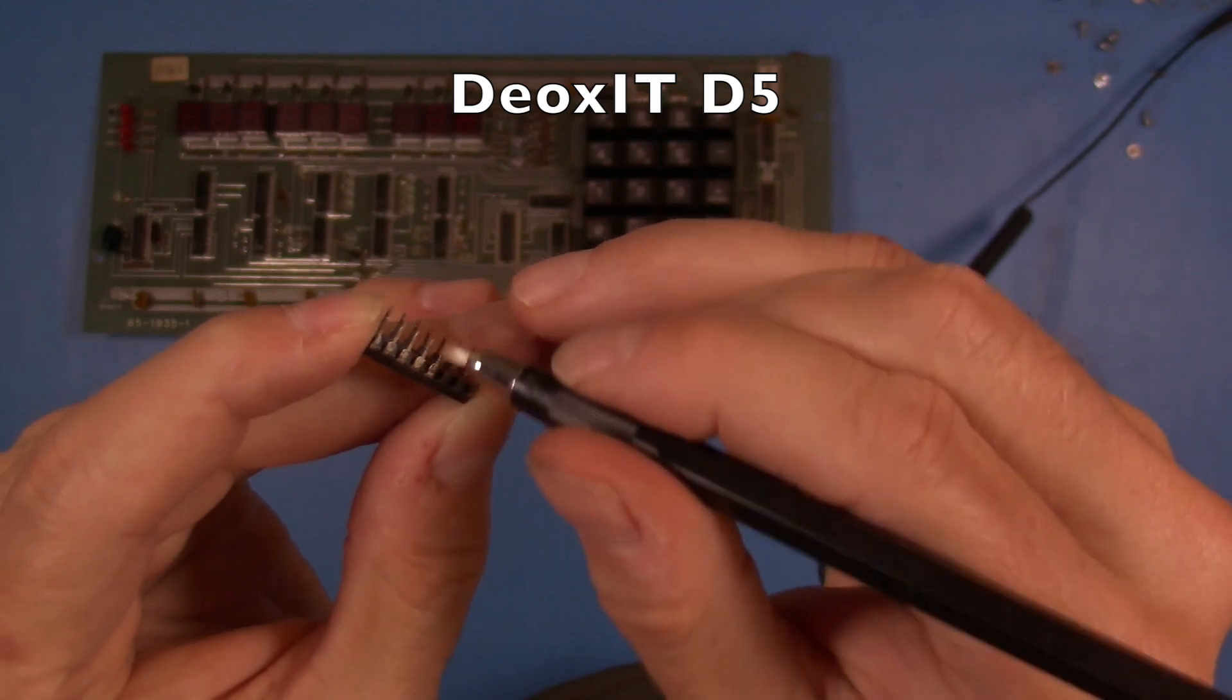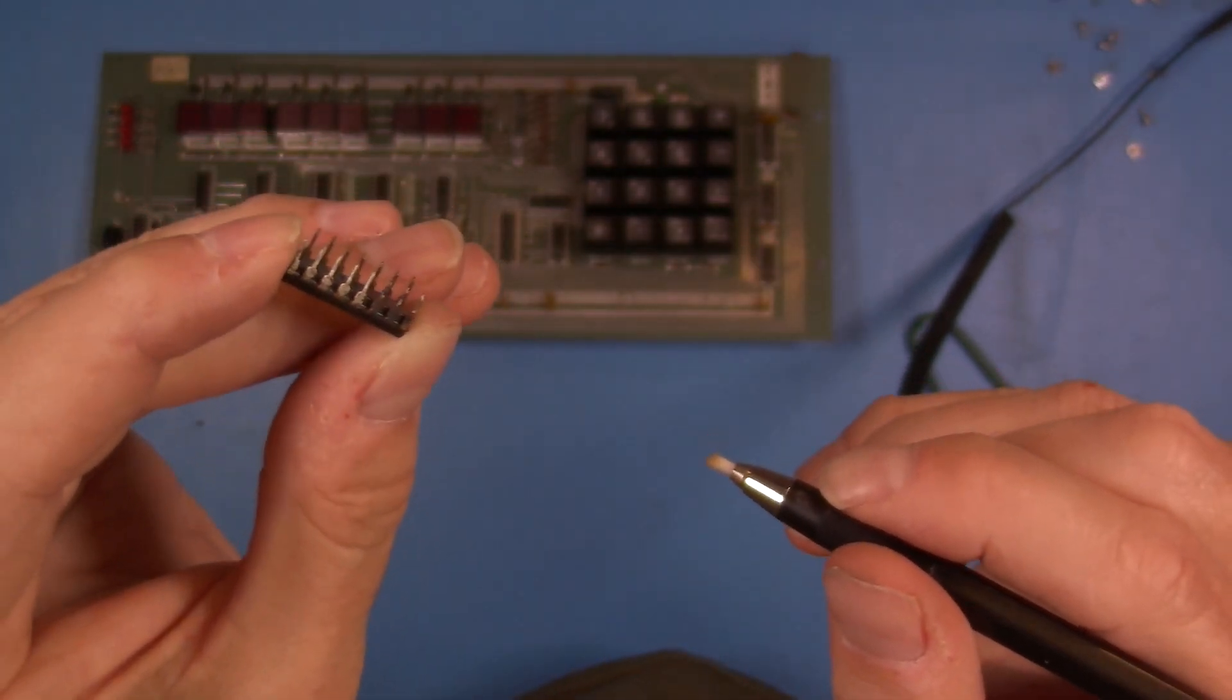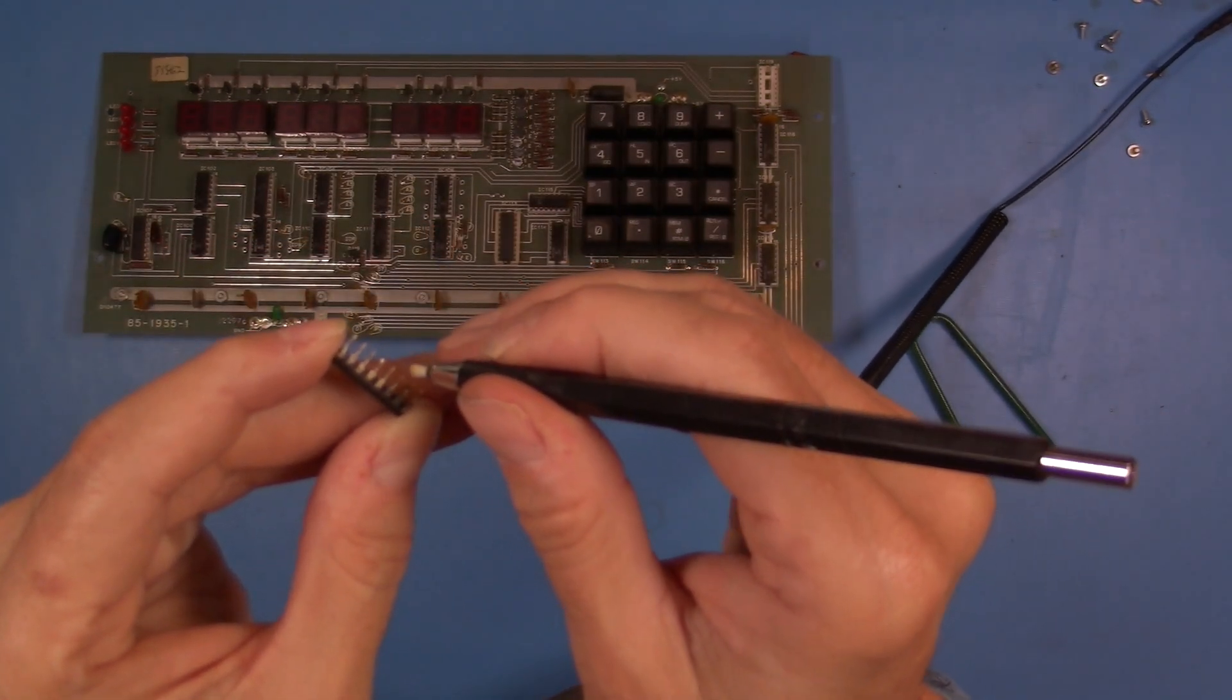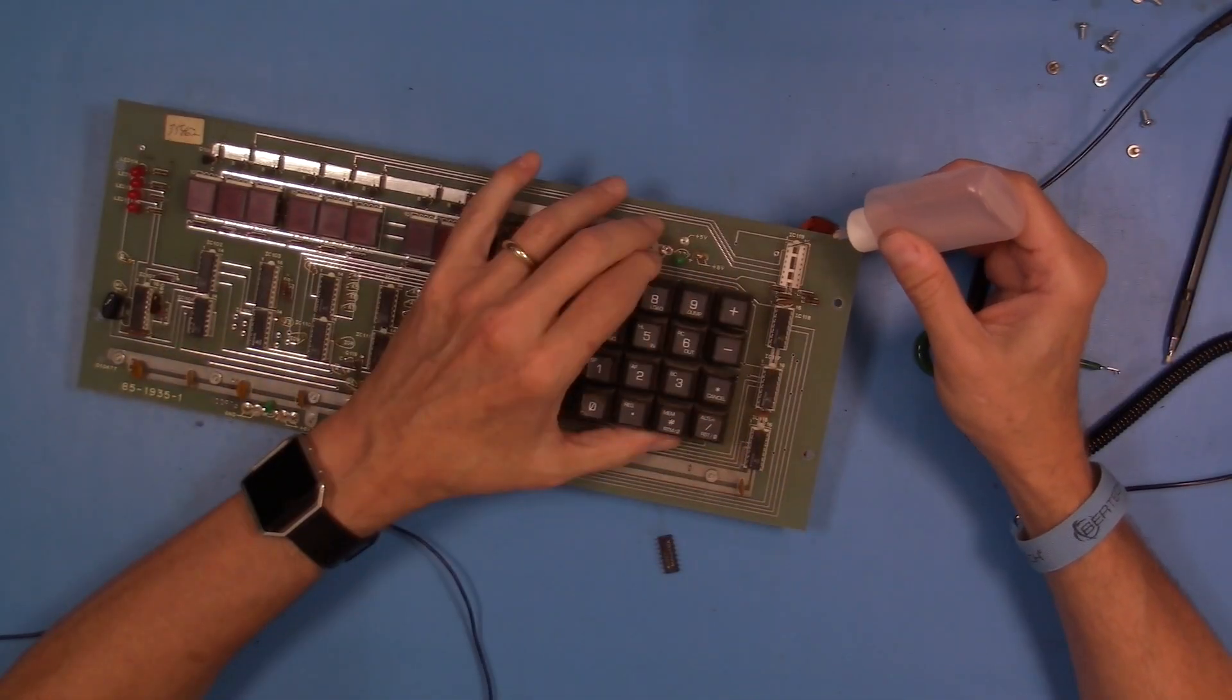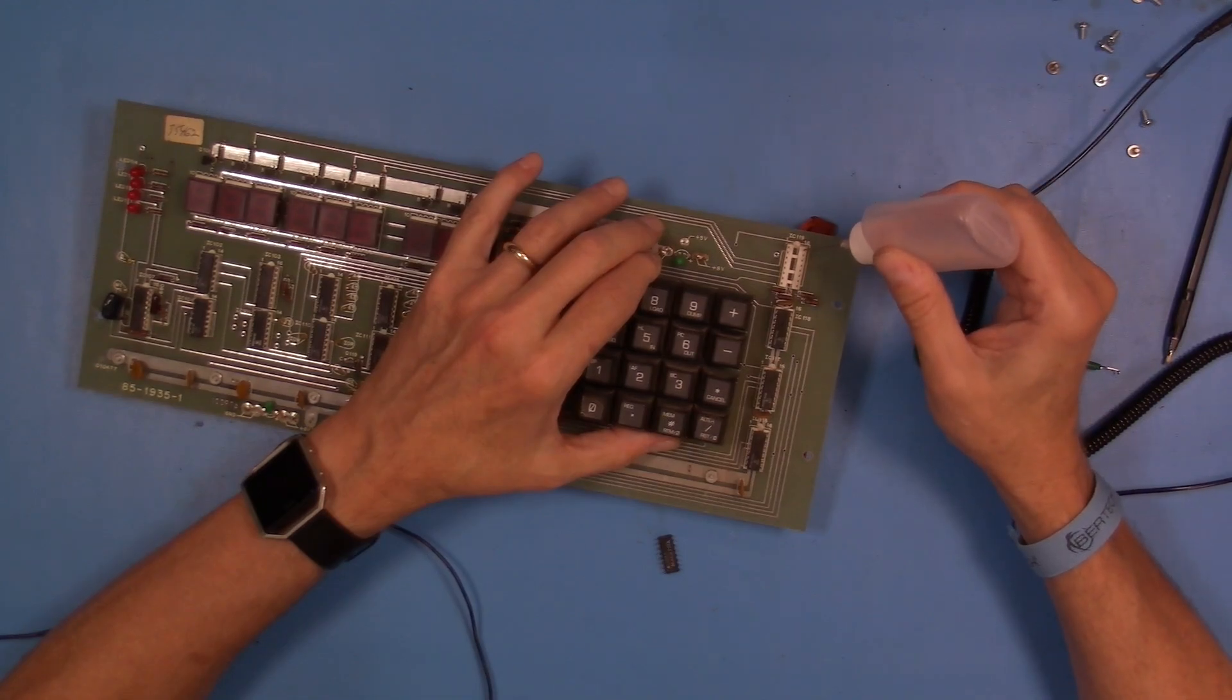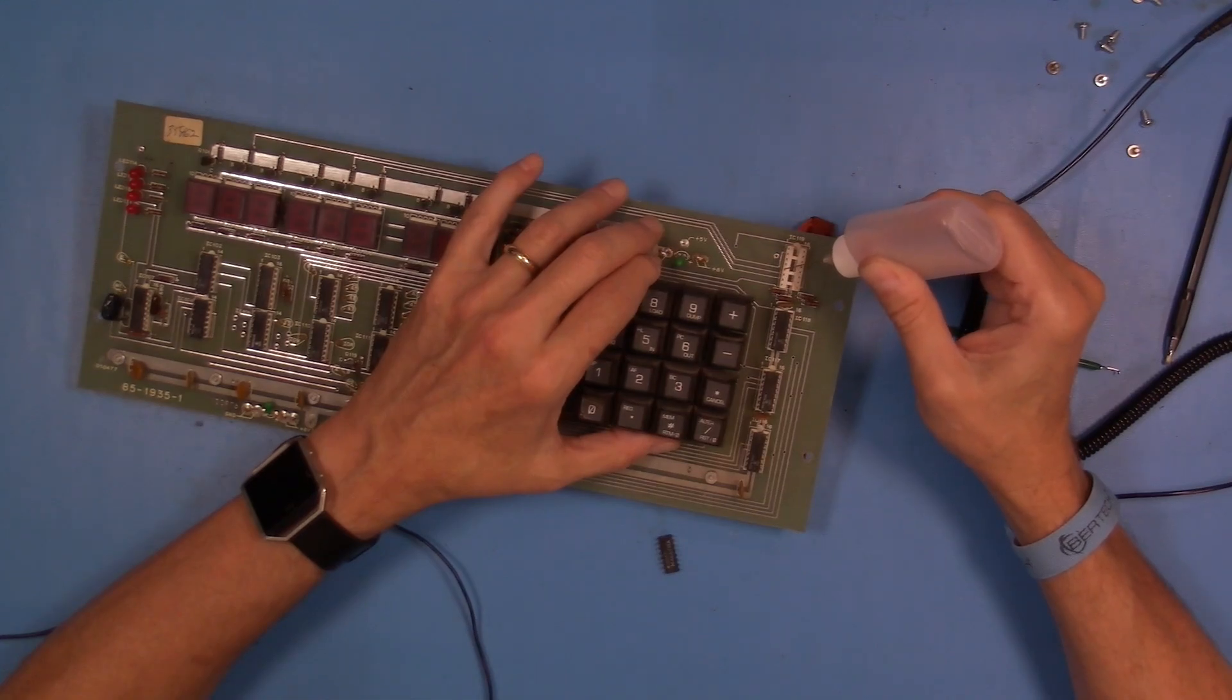But ultimately, I decided that this is not something that I would probably do straight away to all of the different ICs. And there's a couple of reasons for that. One is just simply using deoxit in some of the sockets, I think, would accomplish just as much. And in doing some reading, I read that a lot of these particular chips had a silver plating on the pins.